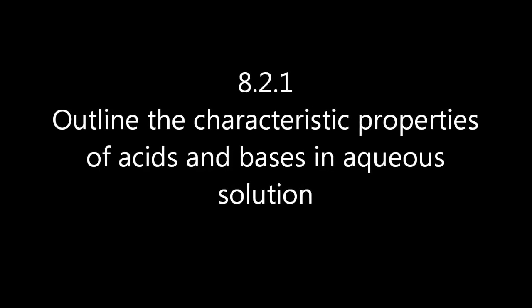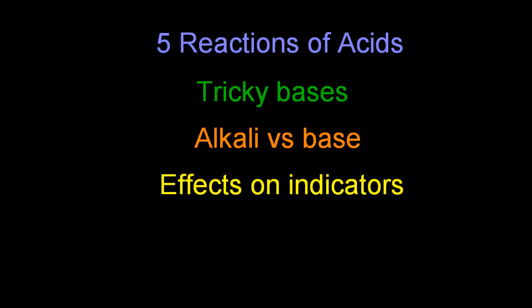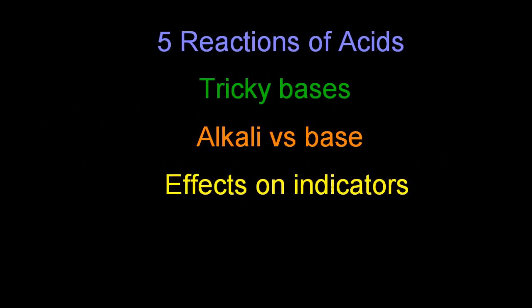Outlining the characteristic properties of acids and bases. Four things you need to know: the five reactions of acids, tricky bases, what's an alkali, and the effect on indicators.